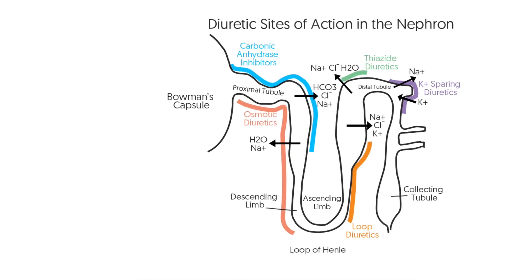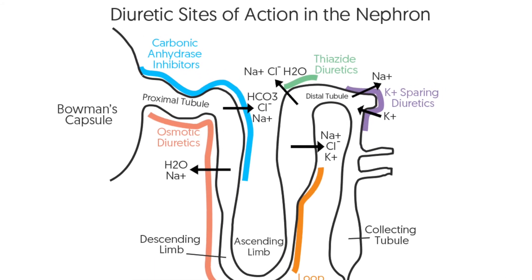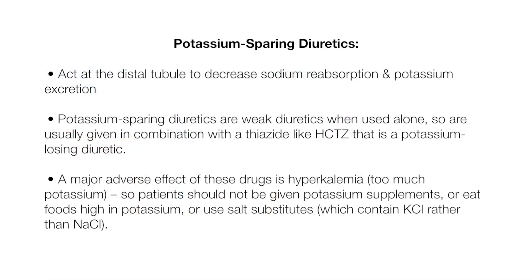Potassium-sparing diuretics act on the distal tubule to decrease sodium reabsorption and potassium excretion. They are weak diuretics when used alone, so are usually given in combination with a thiazide like HCTZ, which is a potassium-losing diuretic. A major adverse effect of these drugs is hyperkalemia, or too much potassium, so patients should not be given potassium supplements, eat foods high in potassium, or use salt substitutes, which contain potassium chloride rather than sodium chloride.